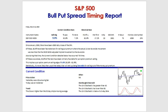Statistically, it's more likely than usual that this market condition will end up being favorable for selling out-of-the-money put premium. That's it for the bull put spread timing report — looking pretty good. It's not a guarantee, and a small percentage of the time the market did move down and hit that one standard deviation level, but if past history of this condition has any bearing on future statistics, it certainly looks favorable from this perspective.